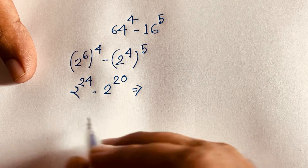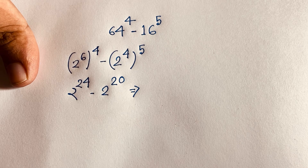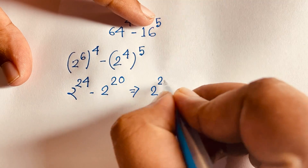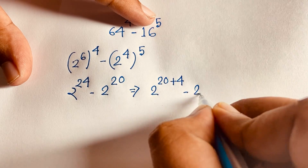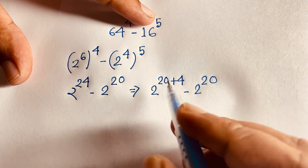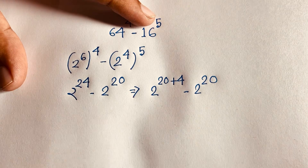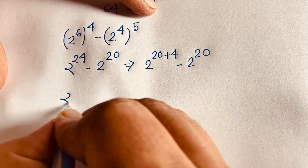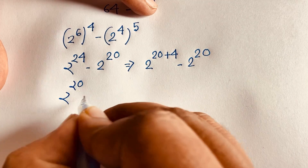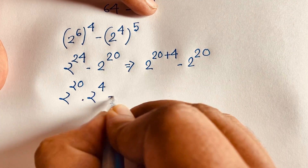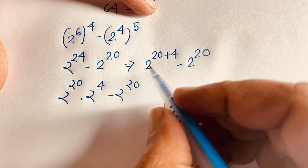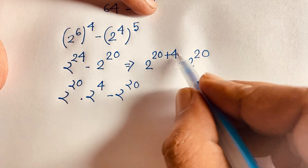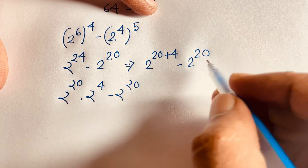In this expression, 2 to the power 24 can be written as 2 to the power 20 plus 4, minus 2 to the power 20. Since 20 plus 4 equals 24, this expression becomes 2 to the power 20 times 2 to the power 4, minus 2 to the power 20, according to the exponential law.